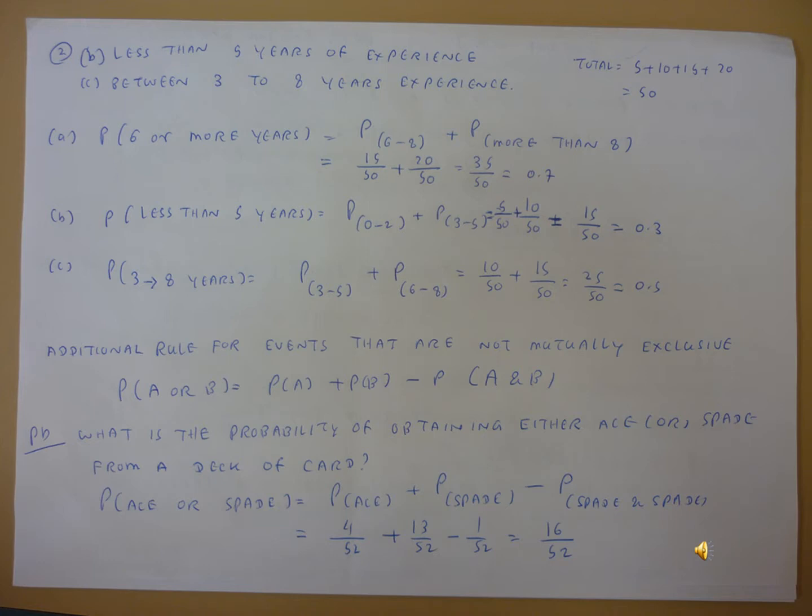We calculate the answer for part B, the less than five year experience wearers. That will be the probability of zero to two years experience wearers plus the probability of three to five years experience wearers. Between zero to two years they are 5 wearers, and three to five years are 10 wearers.